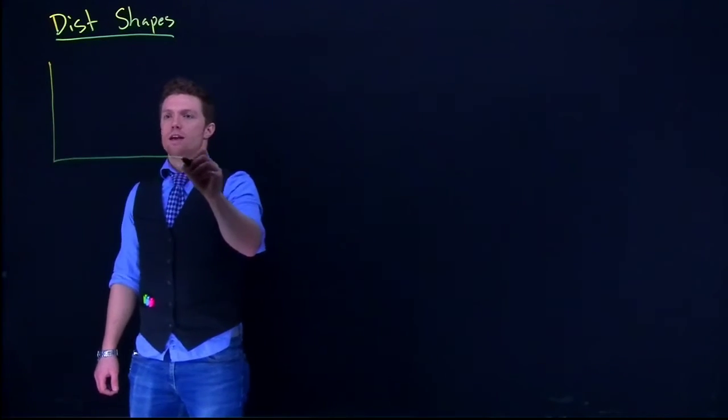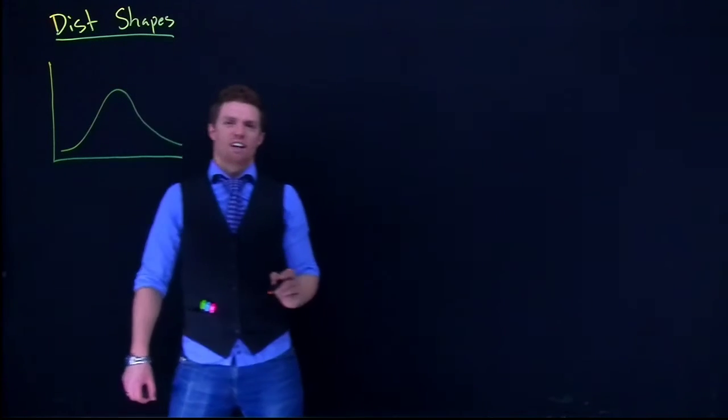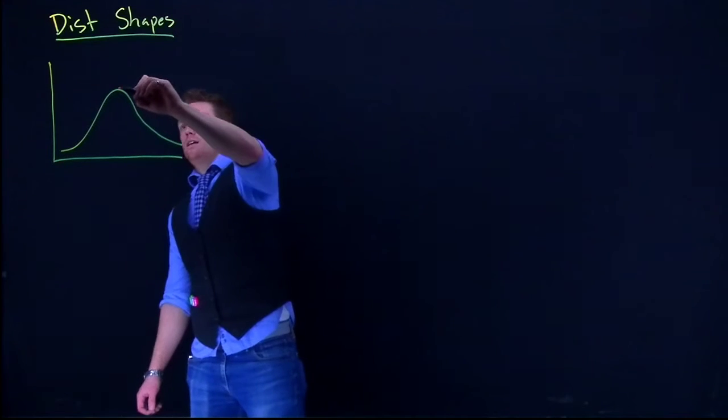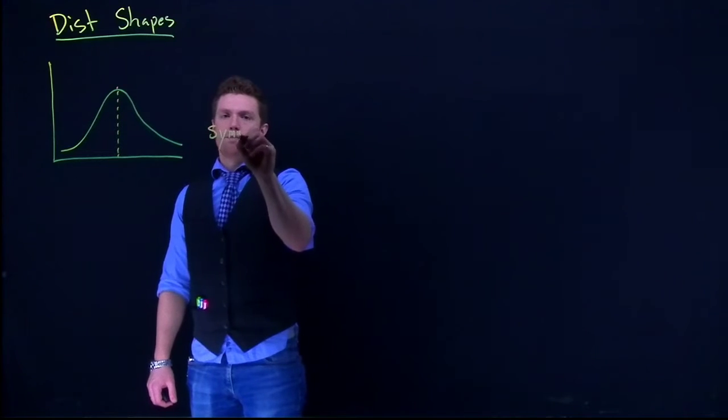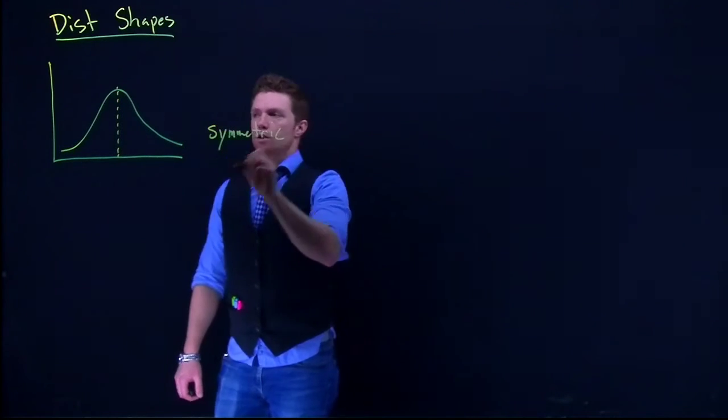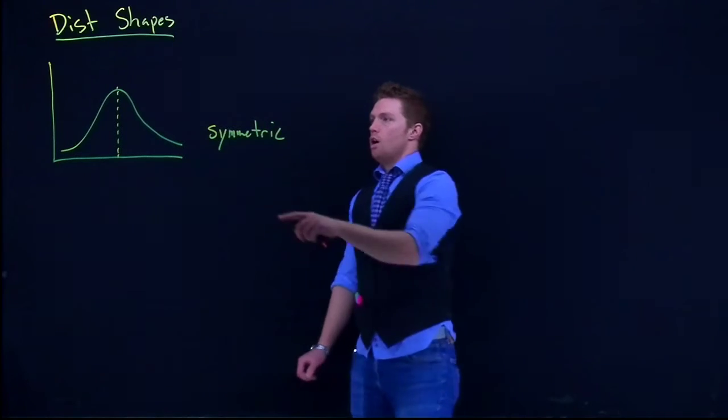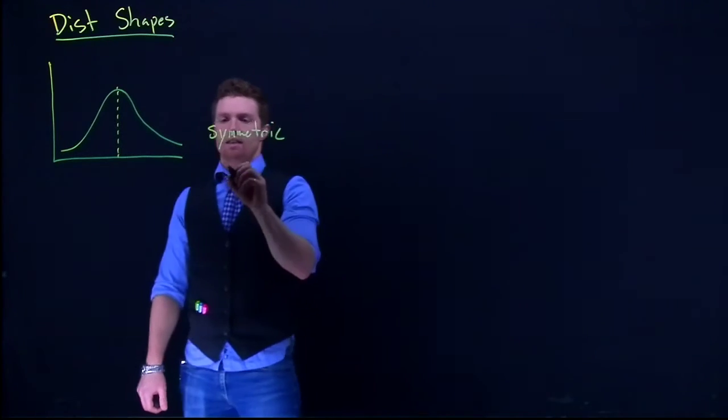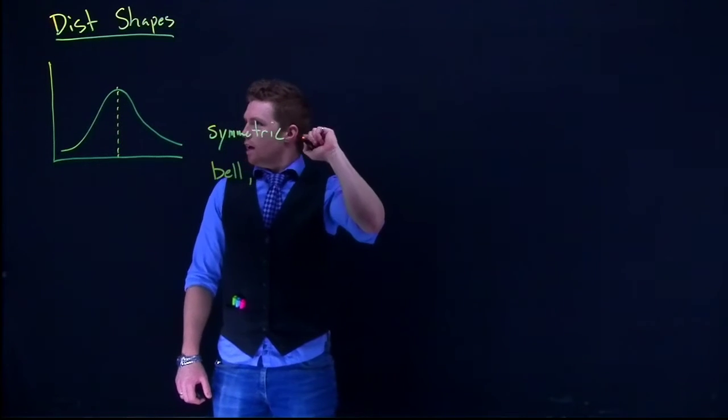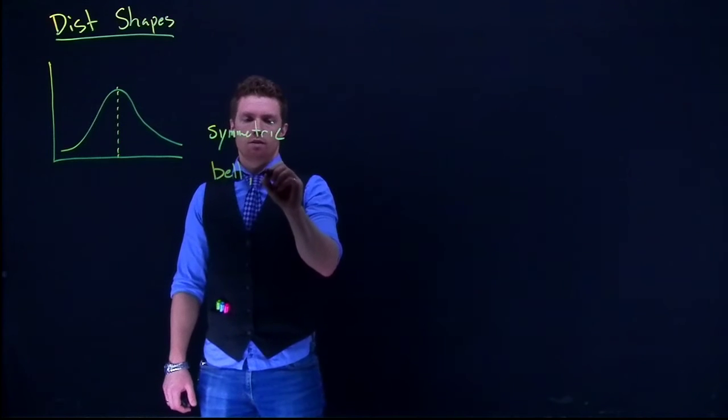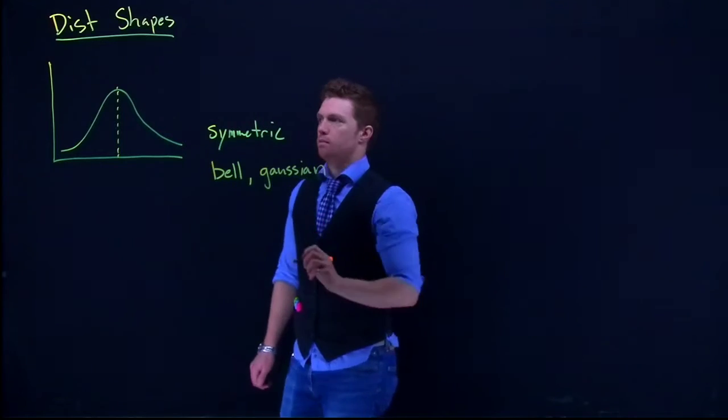Okay, so oftentimes you'll see a graphic pop up like this. This is our standard bell curve and it's what's called symmetric, which means it can be folded about the center line and it'll be the same on both sides. Also, when you see something that looks like this, you'll see it called a bell or sometimes a Gaussian curve.